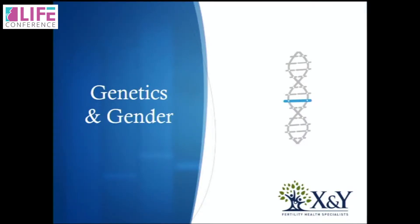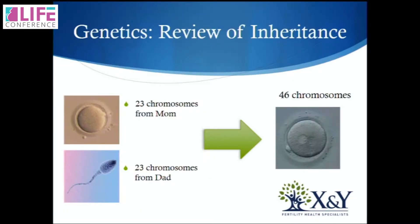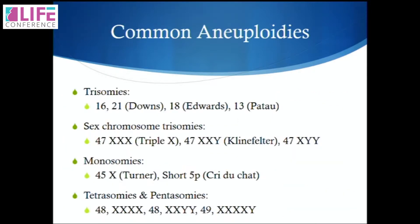Let's look at genetics and gender. The mom brings in 23 chromosomes, the dad brings in 23 chromosomes; we end up as individuals with 46 chromosomes. What happens when it goes wrong and the number changes? We have aneuploidies. Some common aneuploidies: trisomies — trisomy 16; trisomy 21 causes Down's; trisomy 18 causes Edwards; and trisomy 13 causes Patau syndrome. Then we have the sex chromosome trisomies: XXX, Klinefelter's, and 47XYY.